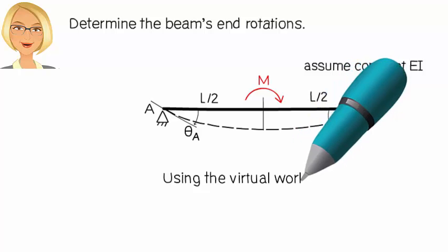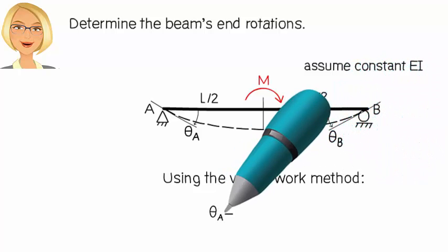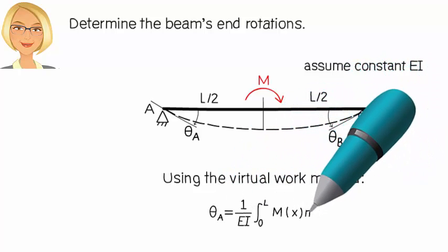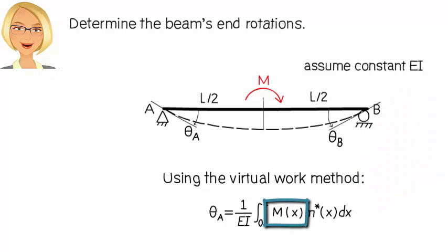theta A can be expressed as the integral of M(x) times M star (x), like this, where M(x) is the beam's bending moment equation due to the applied load, and M star (x) is bending moment equation due to a virtual unit moment placed at A in the assumed direction of joint rotation.